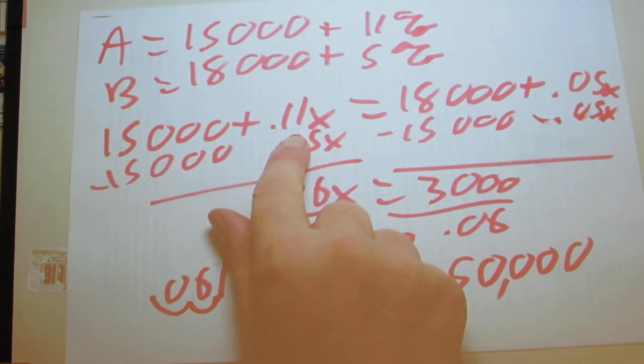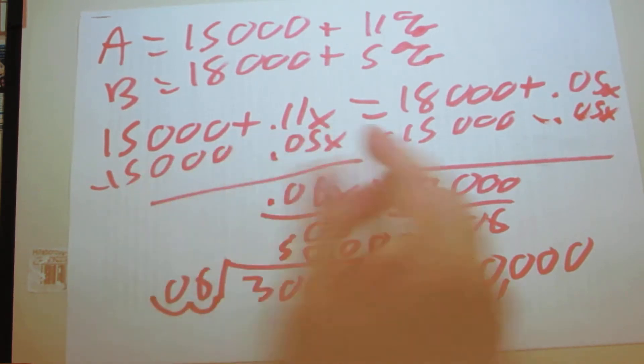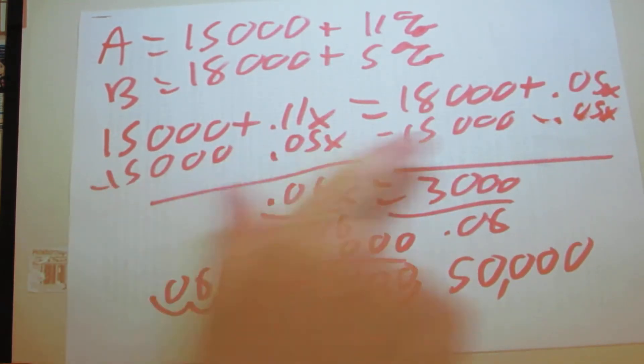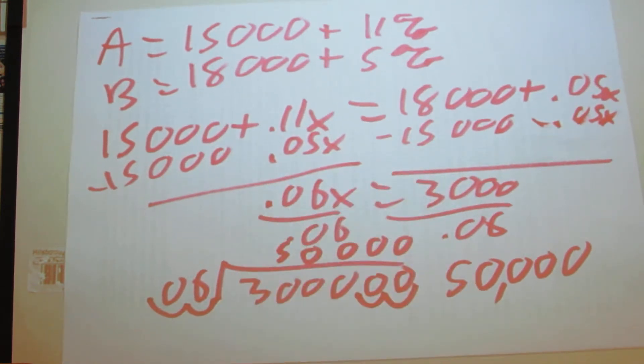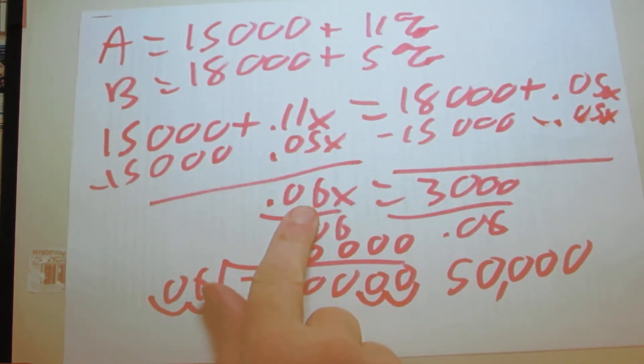Since we're moving the x's to the left, we're going to move the numbers to the right. So we just subtract 15,000 and we're going to be left with 0.06x equals 3,000.